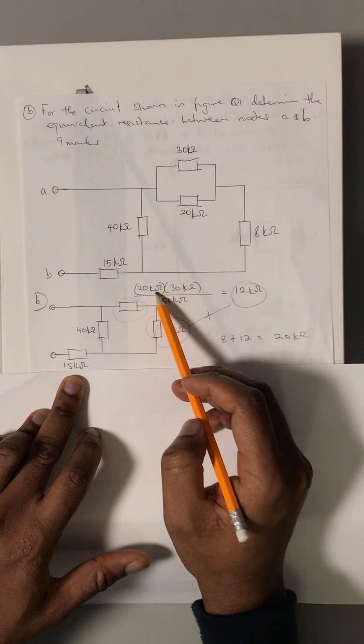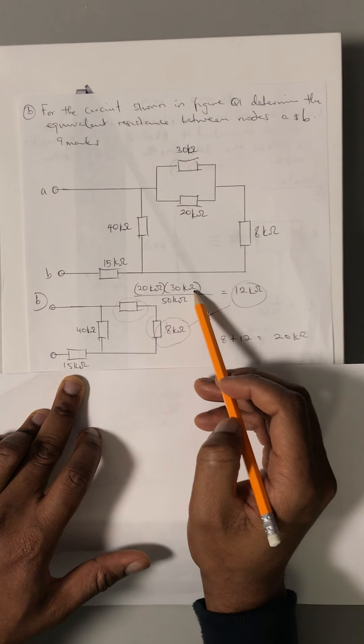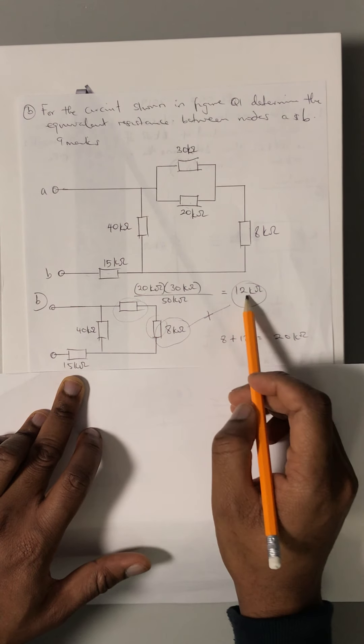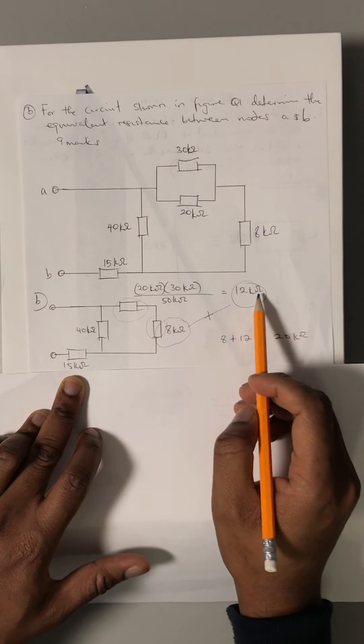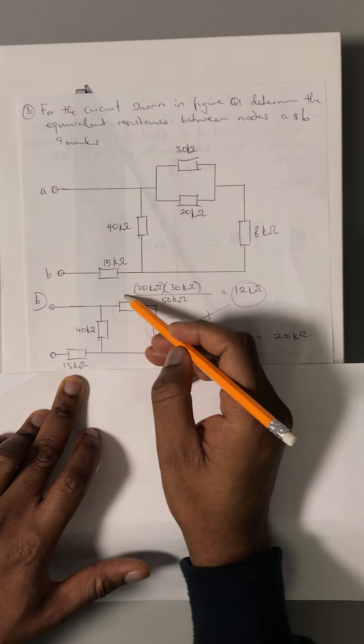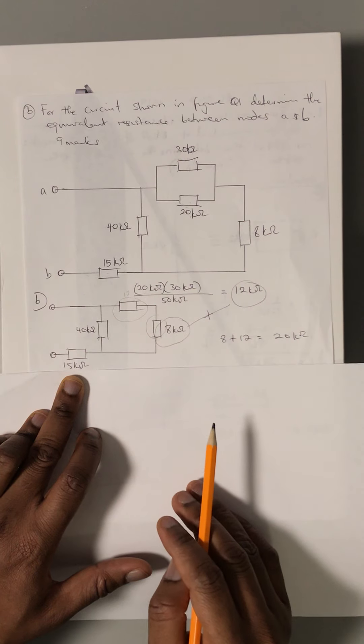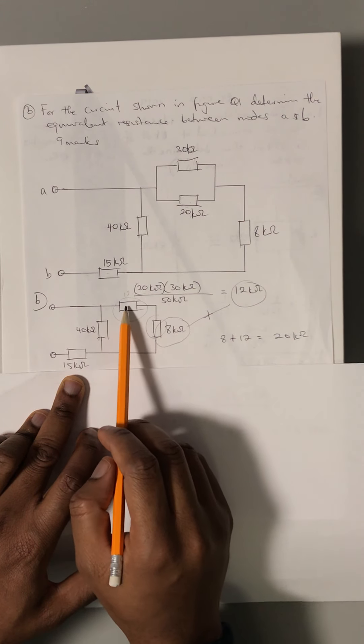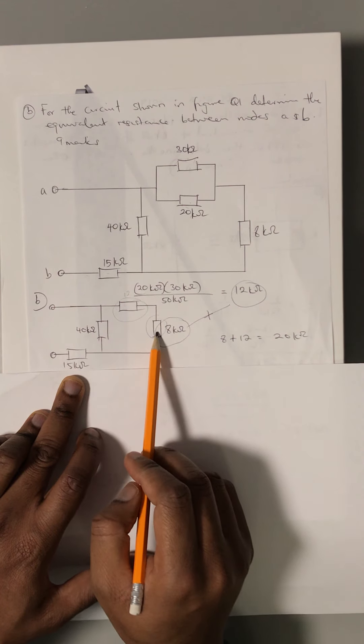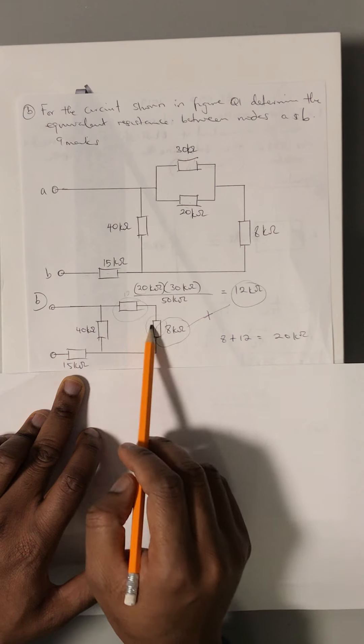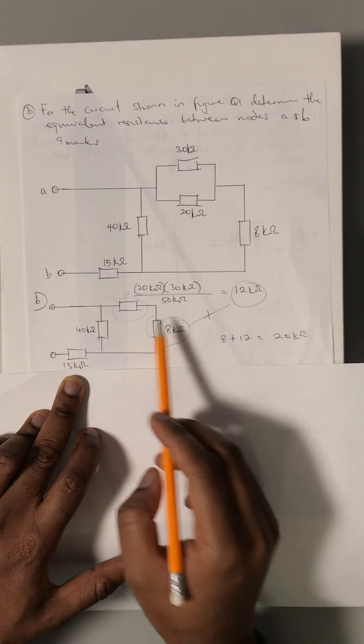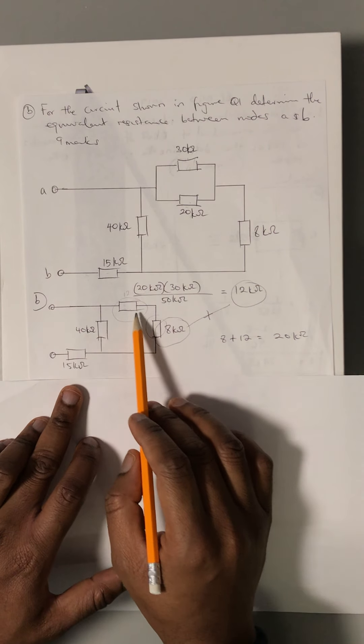We have 20 kilo-ohms multiplied by 30 kilo-ohms over 50 kilo-ohms, which gives us 12 kilo-ohms by use of our calculator. Now that we have 12 kilo-ohms here, we can see that the 12 kilo-ohms and the 8 kilo-ohms are in series.